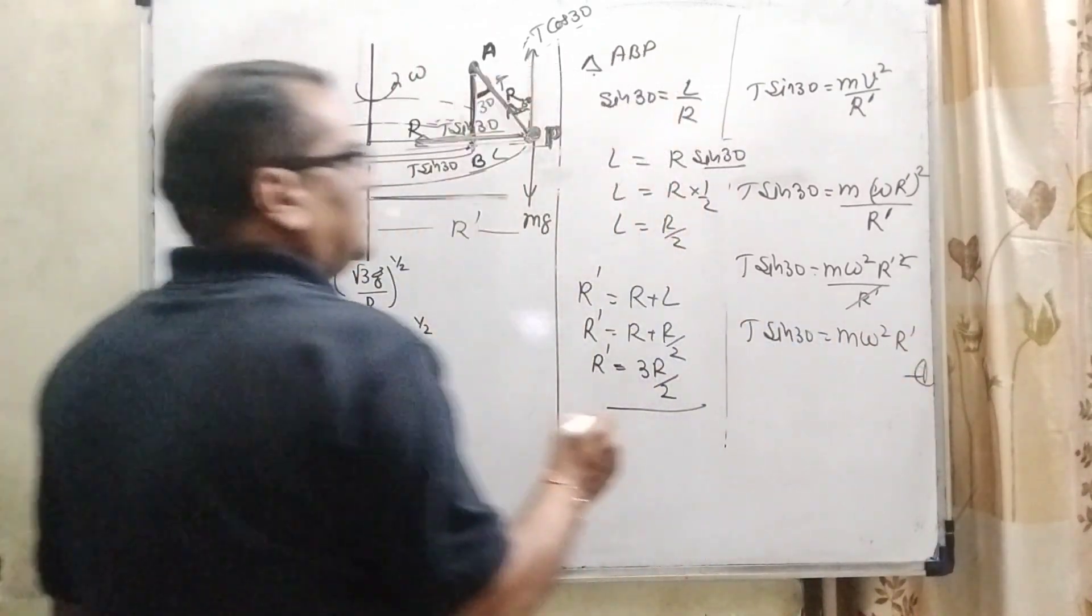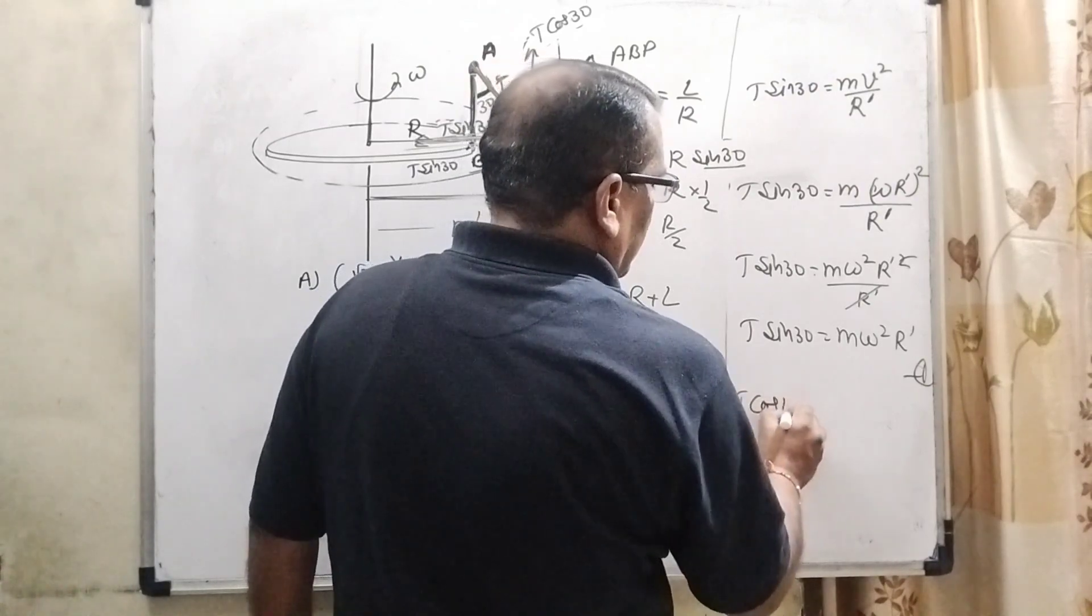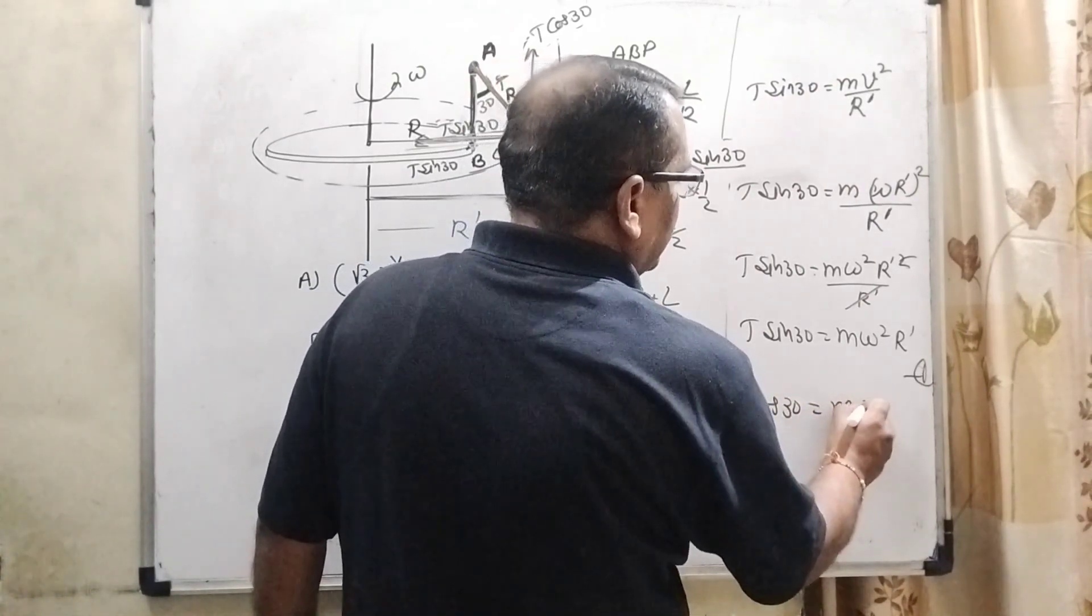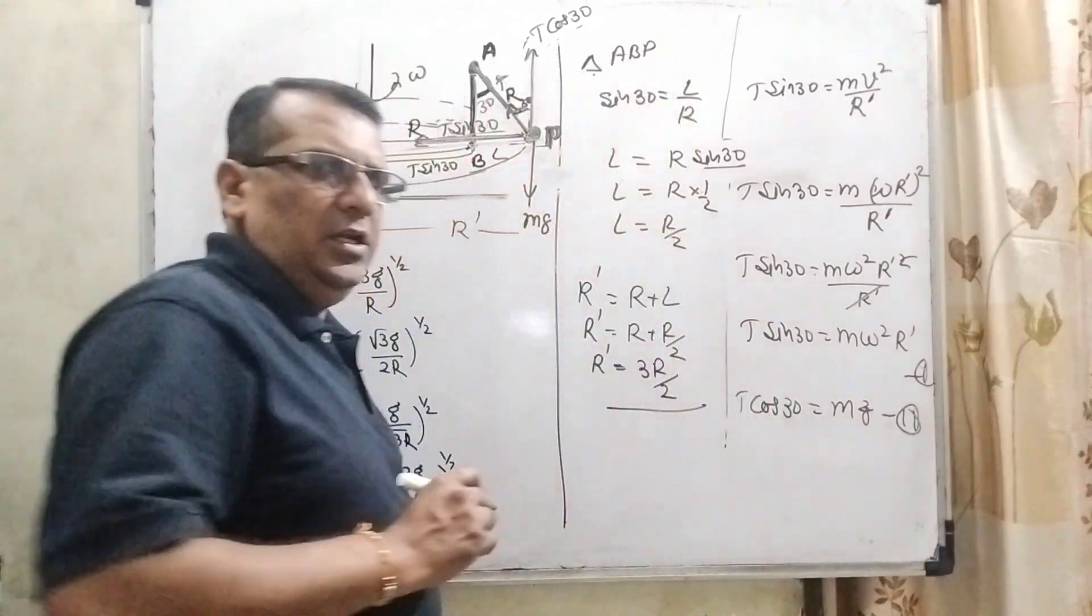Now, T cos 30 balances the weight of this pendulum. It is second equation.